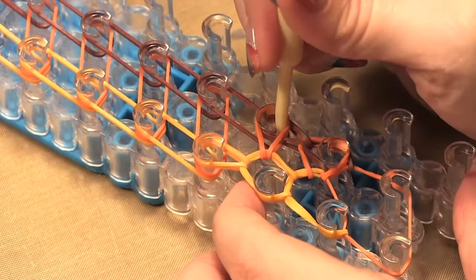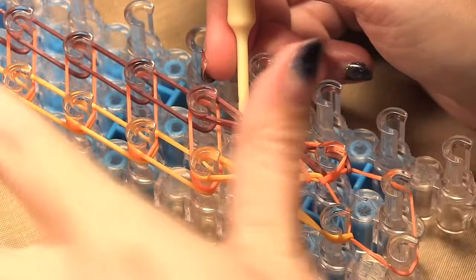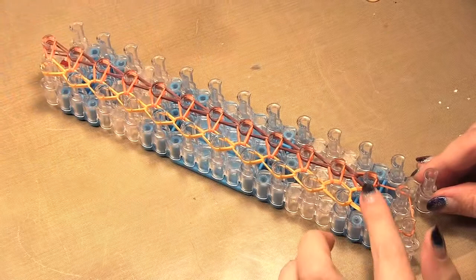Now we move to the peg on the right and push back the orange ones so we can get at that burgundy to move it forward. So you're going to go back and forth from the left to the right, moving all your elastics onto the pegs.